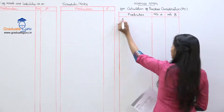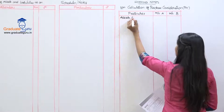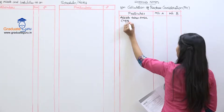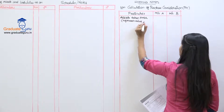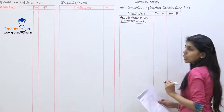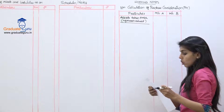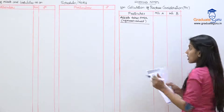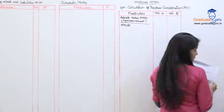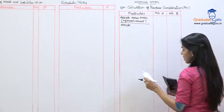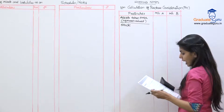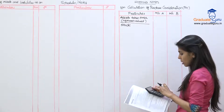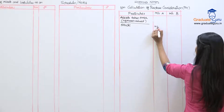Starting with PC calculation, first we will write assets taken over at agreed value. Stock in trade is to be written down by 15%. Stock is 1,70,000. So 1,70,000 minus 15% gives 1,44,500.